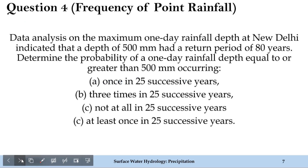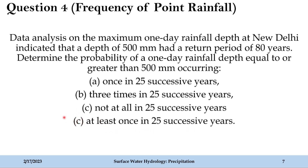Now let's move ahead and solve the last problem of the problem-solving session for week 2. This is on the concept of frequency of point rainfall. Data analysis on the maximum one-day rainfall depth at New Delhi indicated that a depth of 500 mm had a return period of 80 years. Determine the probability of a one-day rainfall depth equal to or greater than 500 mm occurring under four conditions: once in 25 successive years, three times in 25 successive years, not at all in 25 successive years, and at least once in 25 successive years.